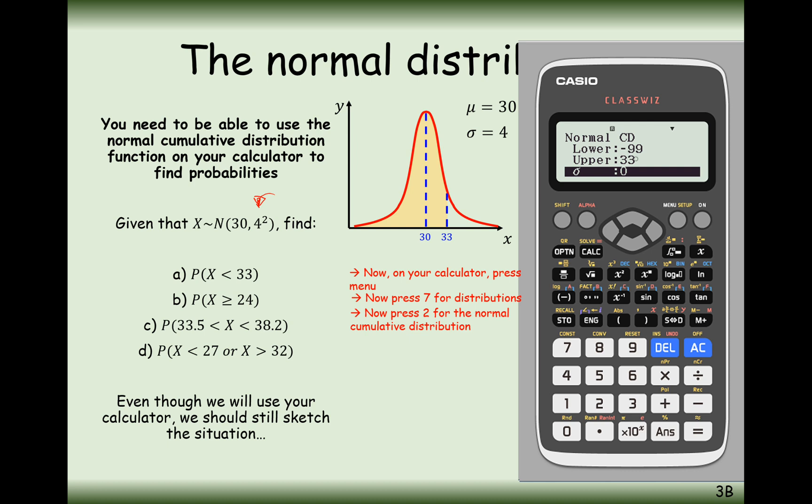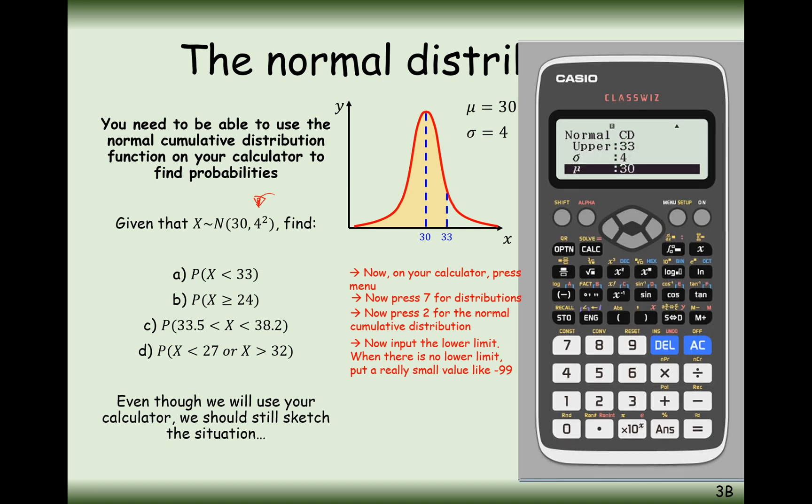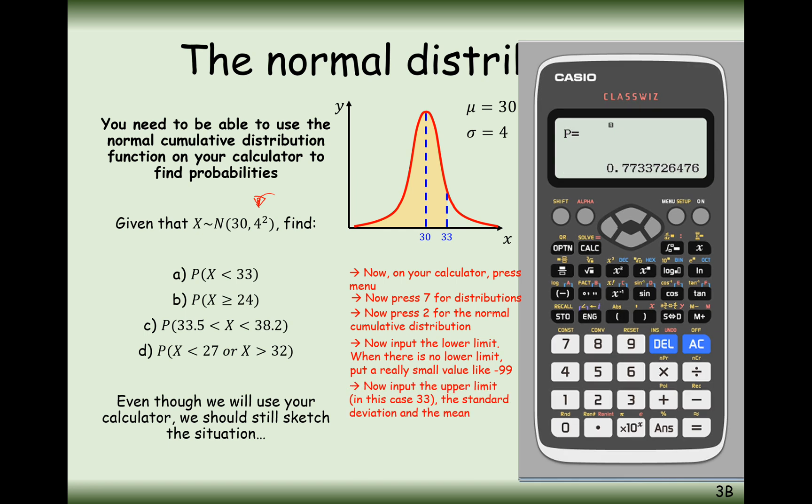Once you've done that, you need to state your lower and upper values on your x-axis. We want to work out less than 33, so there really is no lower bound. What we generally do is type in a really low number like minus 99 or minus 999. The upper boundary is 33. Next, type in the standard deviation and the mean, so that would be 4 and then 30.